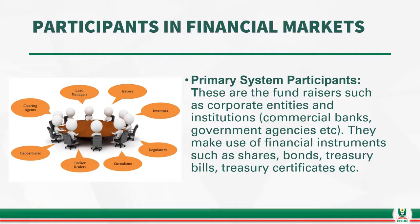There are primary system participants. These are the fundraisers such as corporate entities and institutions like the commercial banks and government agencies. They make use of financial instruments such as shares, bonds, and treasury bills. They are the intermediaries between the surplus unit of the economy and the deficit unit of the economy in the transfer of funds.